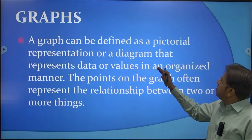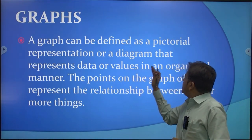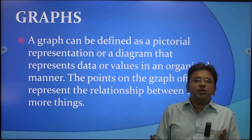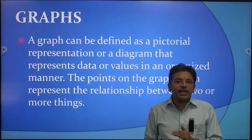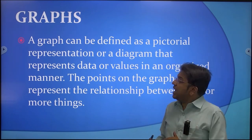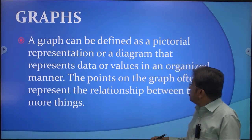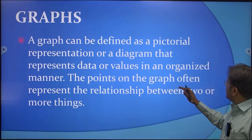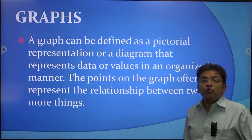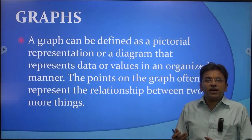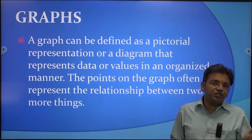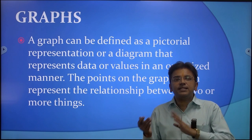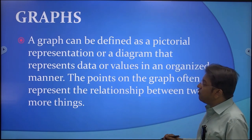A graph can be defined as a pictorial representation or diagram that represents data or values in an organized manner. A graph is drawn on graph paper and has two axes — x and y. We take the values of independent and dependent variables and on that basis represent the data. The points on the graph often represent the relationship between two or more things. Using x, y, or z series, you can show whether the relationship is positive or negative — all these can be easily interpreted by graphs.